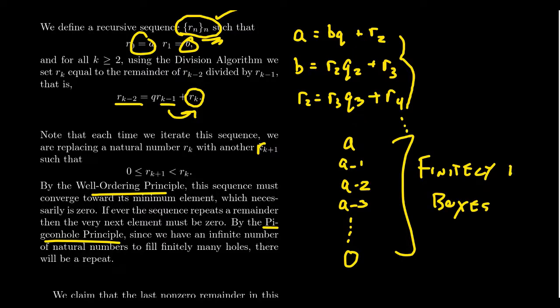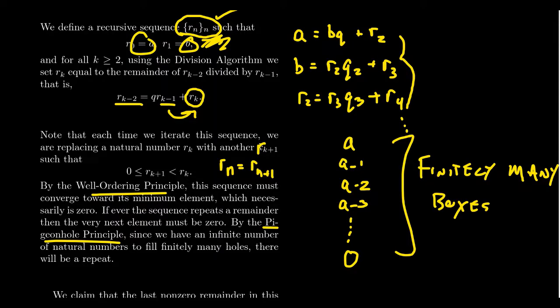Since A is the largest number in the sequence, there are only finitely many possible values from 0 up to A — finitely many boxes. But the sequence is indexed by the natural numbers, so there are infinitely many terms. By the pigeonhole principle, there must be a repetition. When a repetition occurs, that means R_n divides R_{n−1} exactly, the next remainder is zero, and the sequence converges to zero after that. Once it hits zero, it stays at zero.